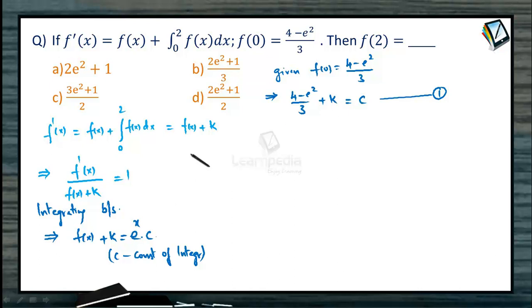Now when we replace the value of k in this equation, what happens to f of x? We get f of x plus c minus 4 minus e squared by 3 equals e power x into c. Or we can rearrange the factors and re-express this as f of x minus 4 minus e squared by 3 equals c times e to the power x minus 1.